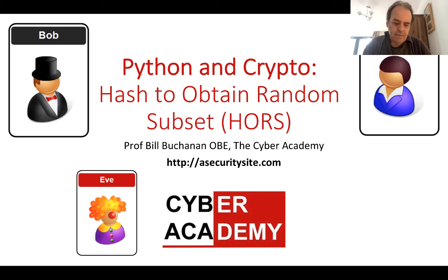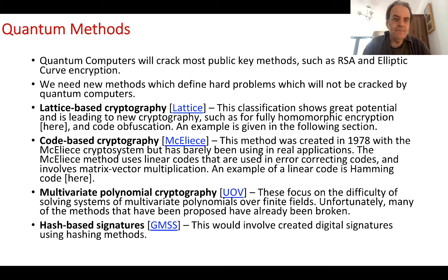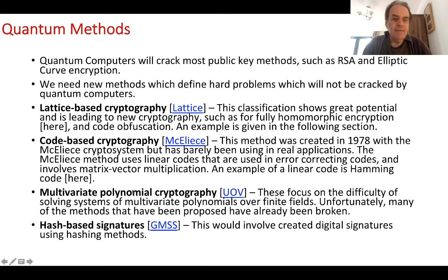Let's have a look at some hash-based signatures. We'll look at hash to obtain random subsets. This is part of quantum-robust methods, which include lattice-based cryptography, code-based cryptography, multivariant polynomial cryptography, and hash-based signatures.